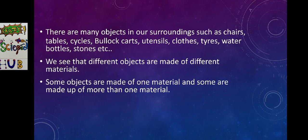What you came to know by doing this activity? There are many objects in our surroundings such as chairs, tables, cycles, bullock carts, utensils, clothes, tires, water bottles, stones, etc. We see that different objects are made of different materials. Some objects are made of one material and some are made up of more than one material.